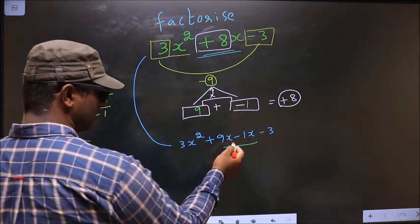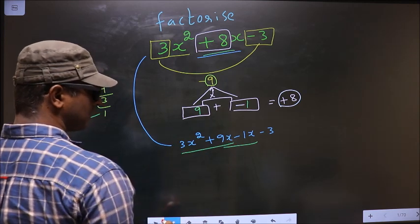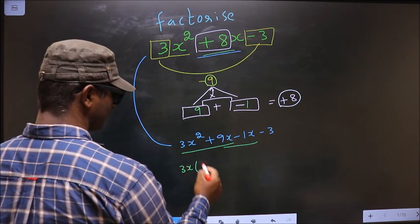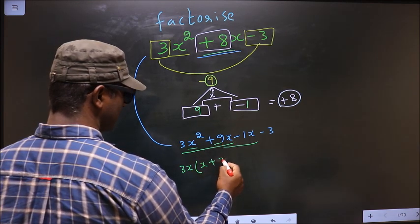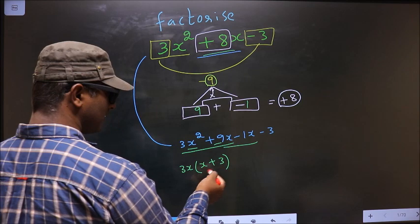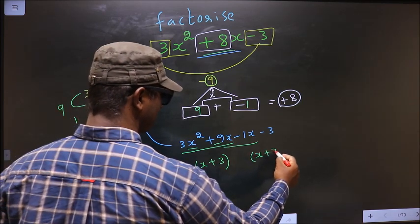Next, from these 2 terms, what can be taken out common is 3x. So here you get x and here you get plus 3. Whatever you have got here, here also you should get the same thing.